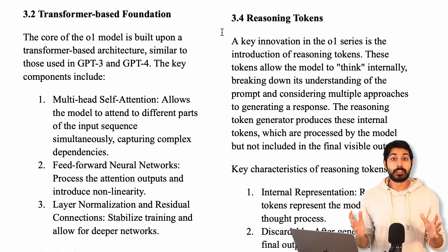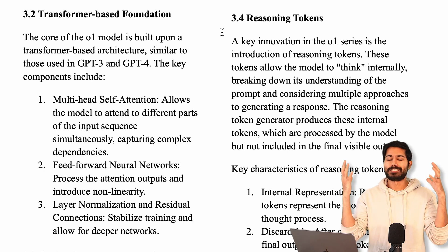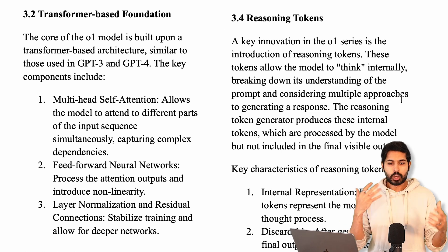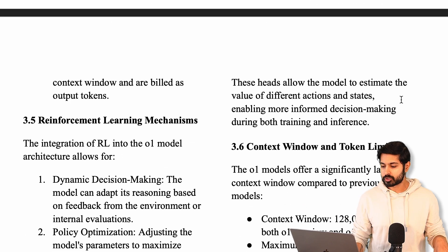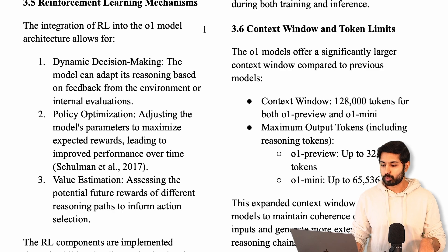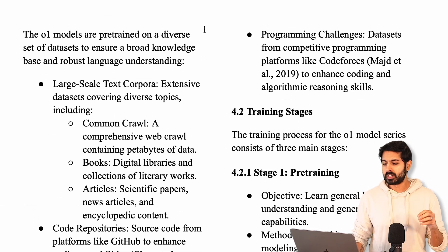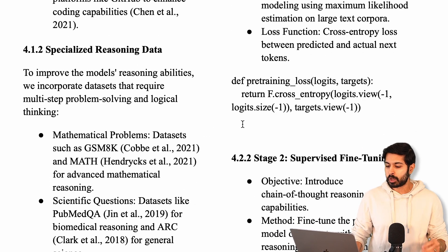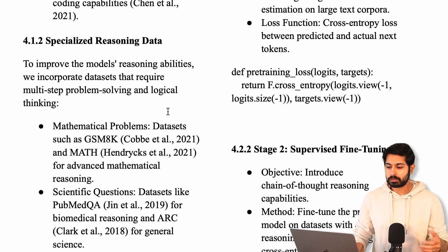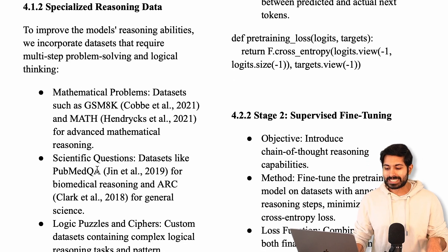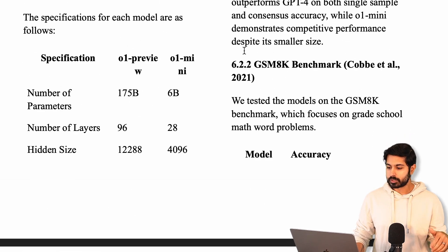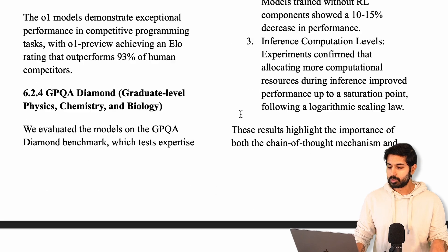Similar to GPT-3 and 4, it's using a transformer as its base — that's not different. What's different is how it's using reinforcement learning during both training and inference time. These reasoning tokens — they talked about them in the guide but didn't explain how they were generated. Reinforcement learning and reasoning are the two unique parts of this model, applied to specialized datasets: mathematical, scientific, logic-based datasets. The research paper also covers experimental results, discussion, conclusion, and cites the works, generated very similar to what was shown in the blog post.